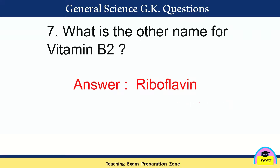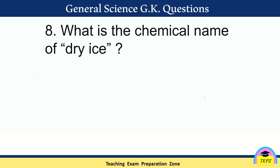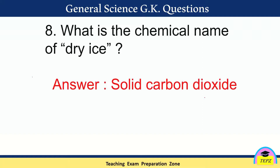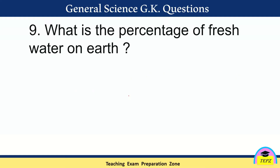What is the other name for Vitamin B2? It is riboflavin. All vitamins have their own chemical names. What is the chemical name of dry ice? The answer is solid carbon dioxide. Carbon dioxide is normally a gas, but when found in solid form it is called dry ice.